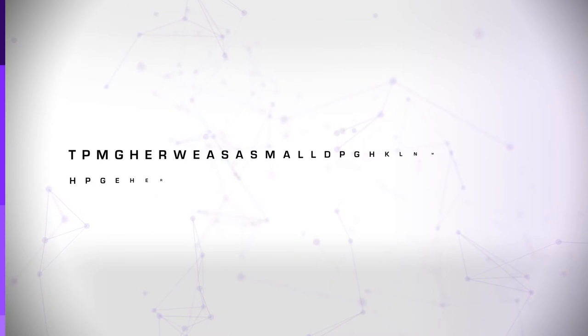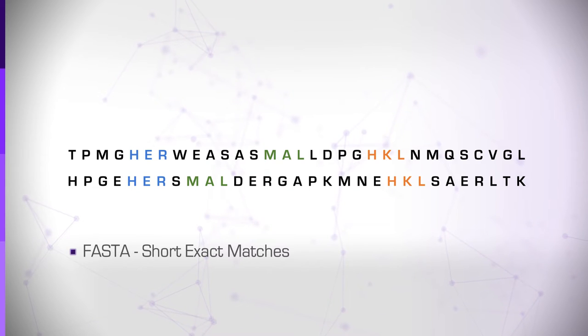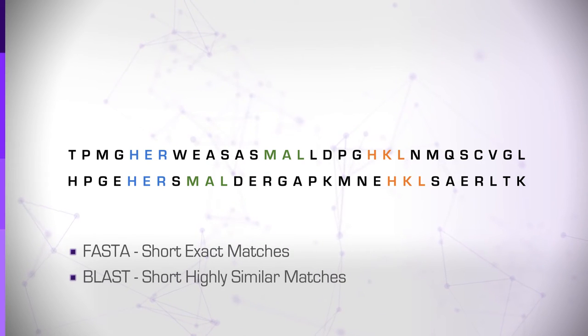So how do FASTA and BLAST work? The main premise of both algorithms is that similarity along a relatively long stretch of DNA or protein sequence is highly likely to manifest itself in several short exact matches in FASTA, or short highly similar matches in BLAST. These short matches can be found quickly and used as anchors or seeds for subsequent extension steps. BLAST has undergone several algorithmic developments since its inception in 1990, and I will briefly describe the main steps in the core of the algorithm.